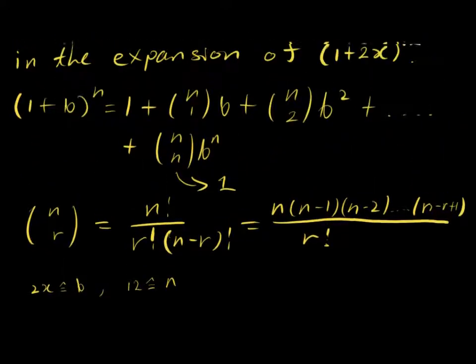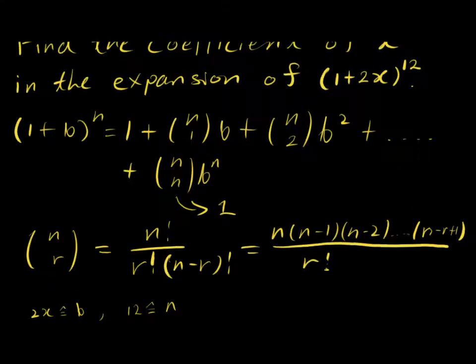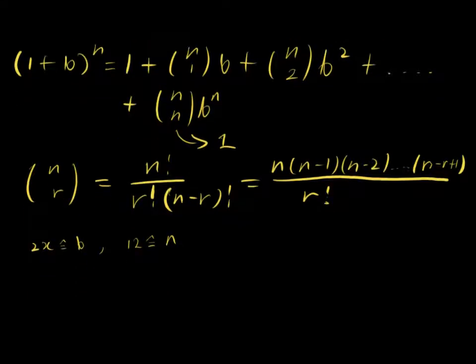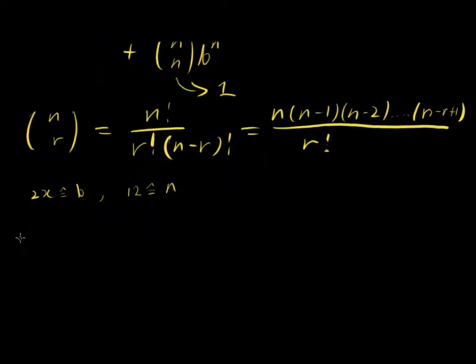So in this case here, 1 plus 2x to the power of 12, let's just quickly write out the expansion. So 1 plus 2x to the power of 12 is equal to 1 plus 12 choose 1 times 2x, because now b is 2x.